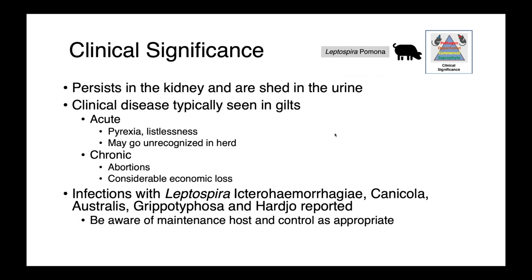In pigs, Leptospira serovar Pomona is host-adapted, persisting in the kidney and shedding into the urine. Clinical disease is most typically seen in gilts — young females after their first litter — with pyrexia and listlessness that may go unrecognized in the herd. In chronic infections, abortions can cause considerable economic losses. Other serovars recognized in pigs include Icterohaemorrhagiae, Canicola, Australis, Grippotyphosa, and Hardjoe. Knowing which serovar is involved helps target control and biosecurity measures toward the host species most likely shedding the organism — for example, Icterohaemorrhagiae is associated with rats.